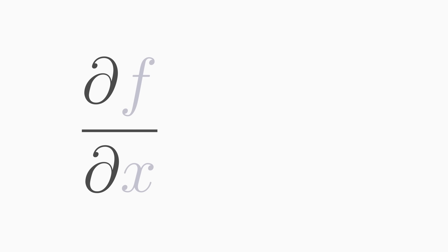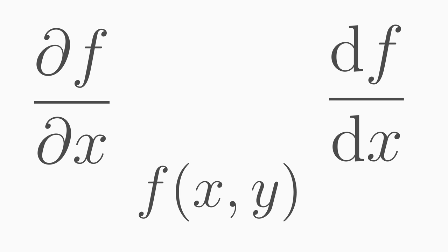What is the difference between a partial derivative and a total derivative of a function f? Here the function f depends on x and y, and in both derivatives we differentiate with respect to x.